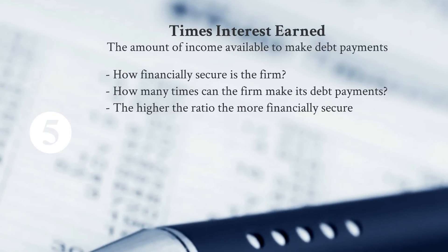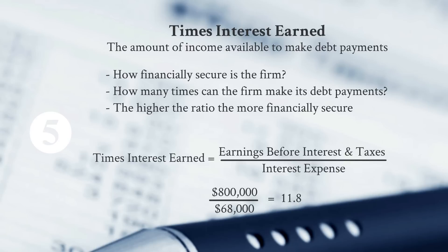Number five on our list is Times Interest Earned — the amount of income available to make debt payments, expressed as how many times the firm could cover those payments. The higher the ratio, the more financially secure the firm. We calculate it as earnings before interest and taxes (EBIT) divided by interest expense. In this case, we get 11.8 — a very strong ratio.